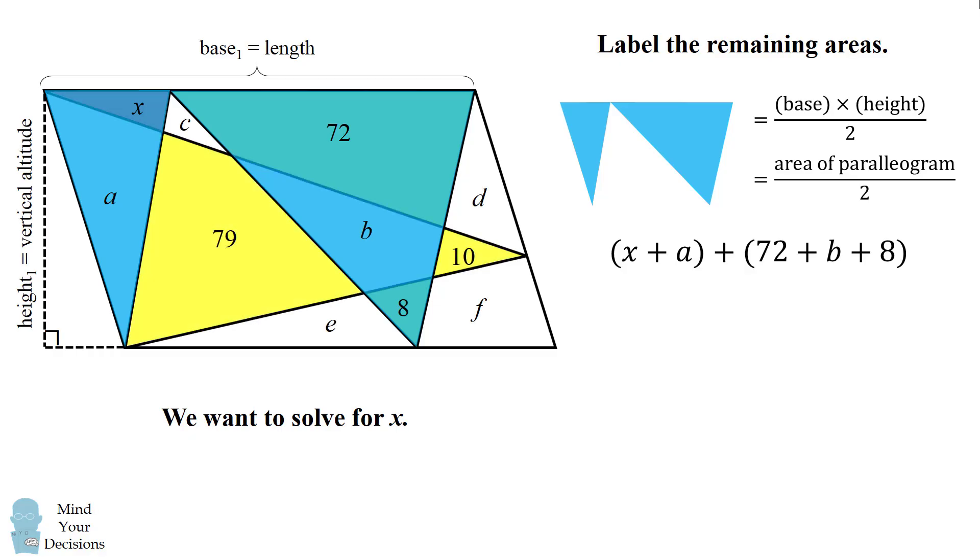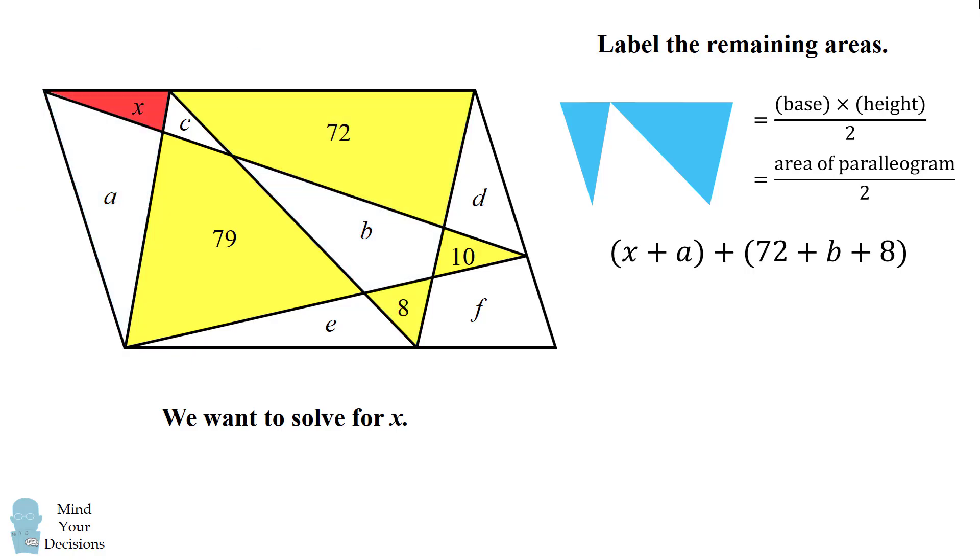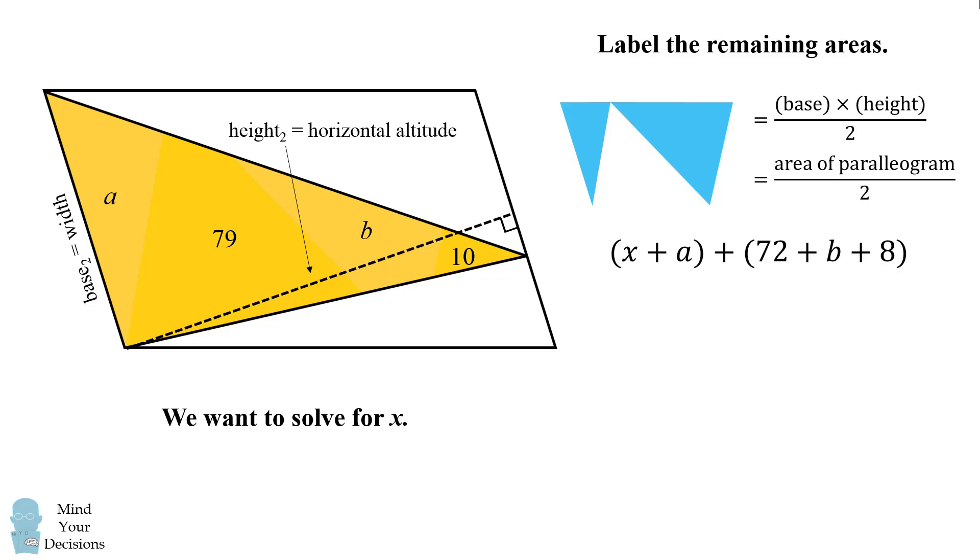Now let's look for another triangle whose area is half the area of the parallelogram. Consider this orange triangle here. This orange triangle spans the width of the parallelogram, and its height is equal to the horizontal altitude. So its area will also be half the area of the parallelogram. We can write out its area as a plus 79 plus b plus 10.